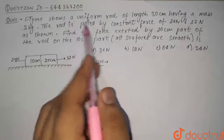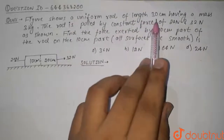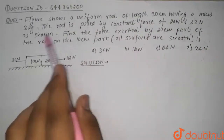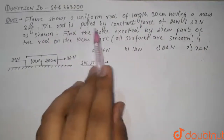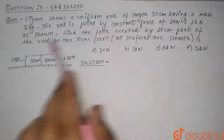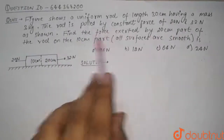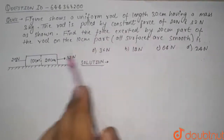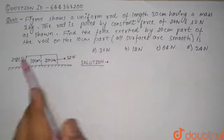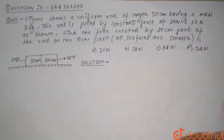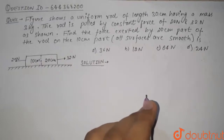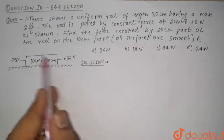The question shows a uniform rod of length 30 centimeters having a mass of 3 kg. The rod is pulled by a constant force of 20 newton and 32 newton as shown. Find the force exerted by the 20 centimeter part of the rod on the 10 centimeter part. All surfaces are smooth.